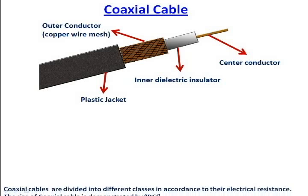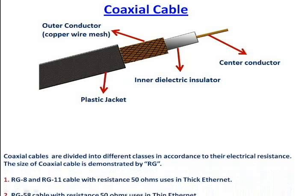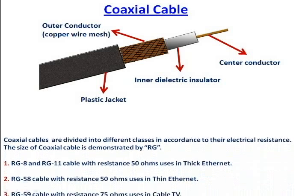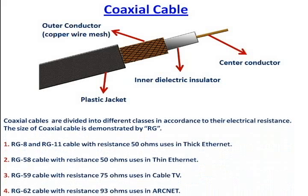Coaxial cables are divided into different classes in accordance with their electrical resistance. The size of coaxial cable is demonstrated by RG. First, RG-8 and RG-11 cable with resistance 50 ohms are used in thick Ethernet. Second, RG-58 cable with resistance 50 ohms is used in thin Ethernet.